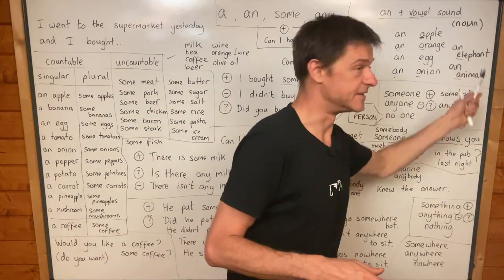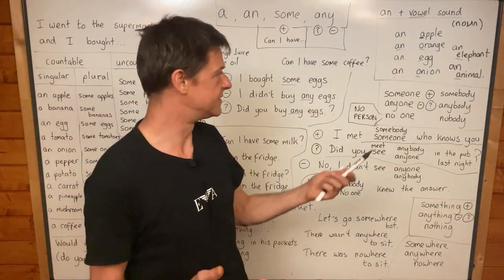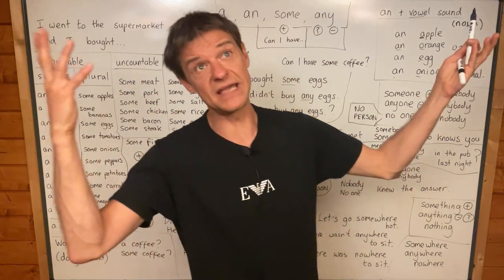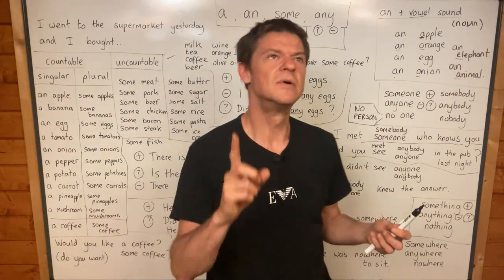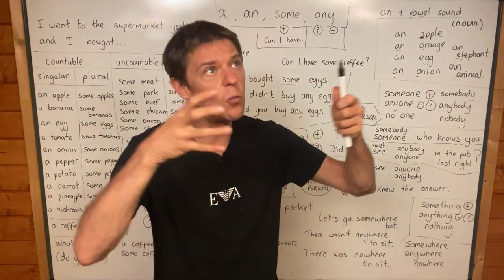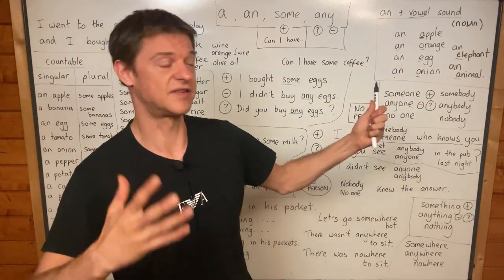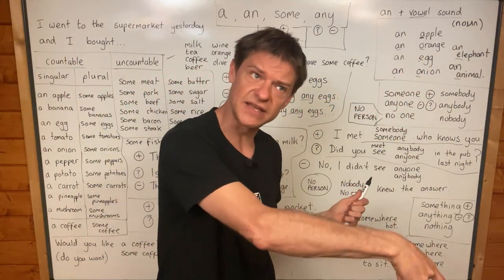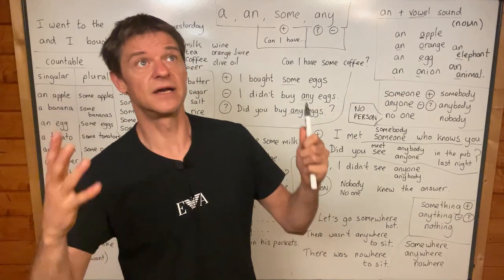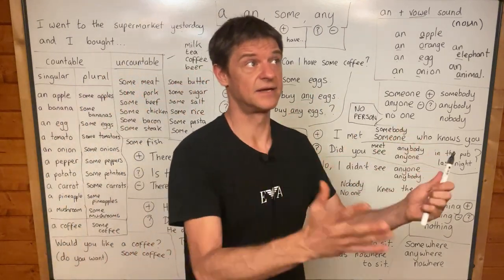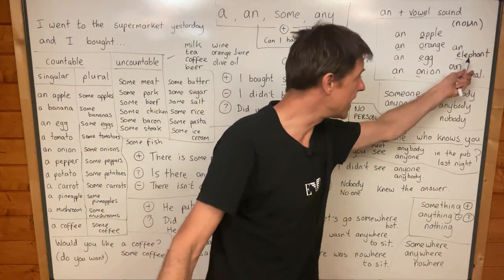An elephant — the big animal. Maybe the biggest animal. Maybe not the biggest; maybe the whale is the biggest animal. It lives in the sea, in the ocean.